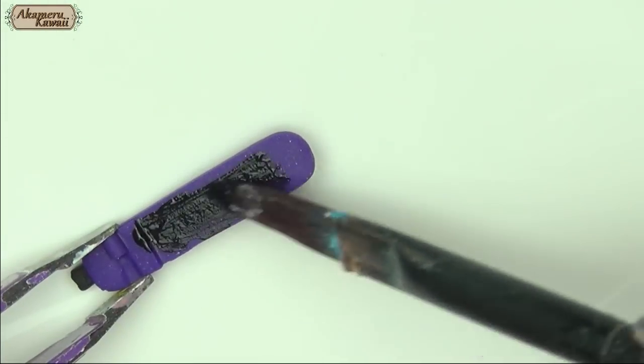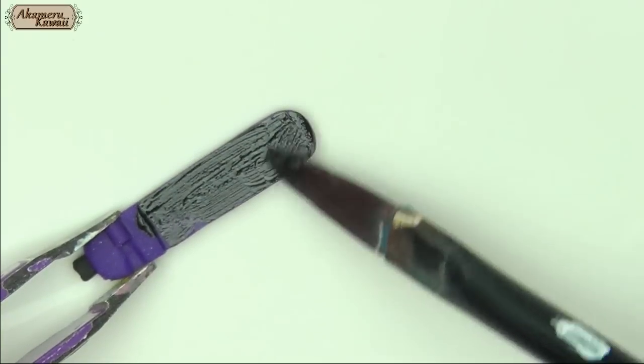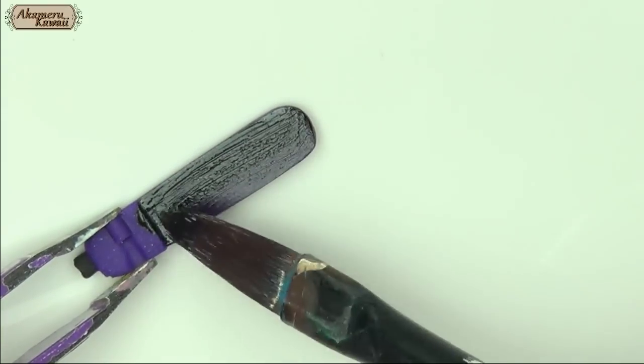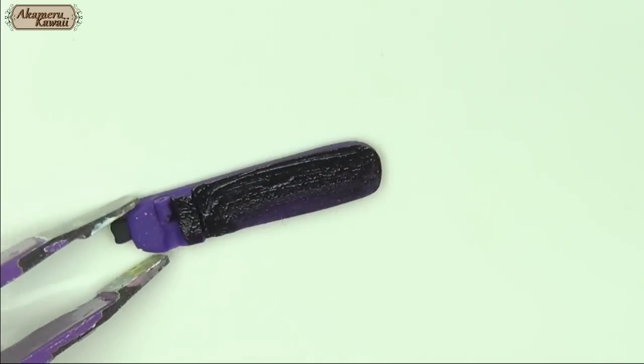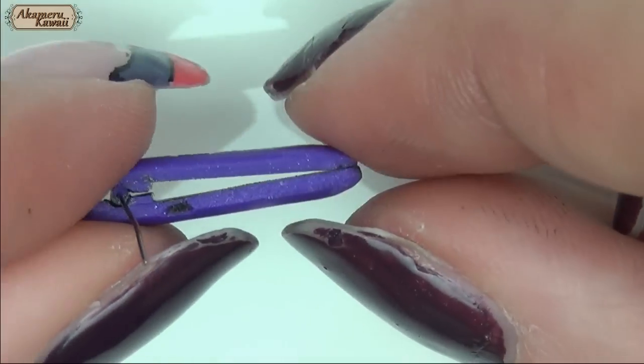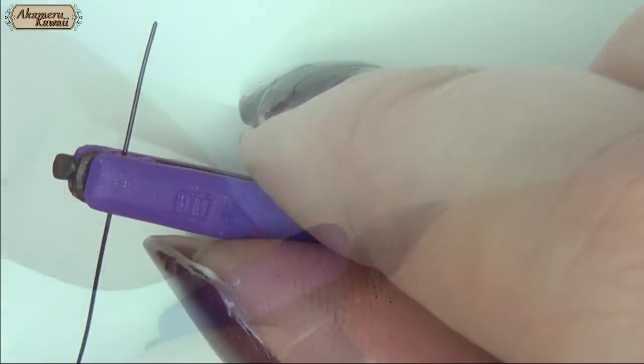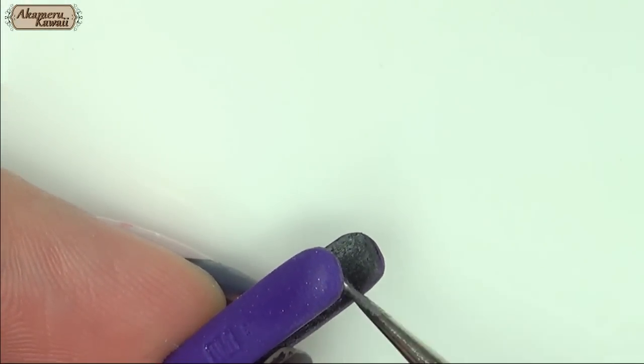Bake everything completely before adding details with acrylic paint. Put a piece of wire through the clay tube. Cut two small squares of thin metal and glue them in place.